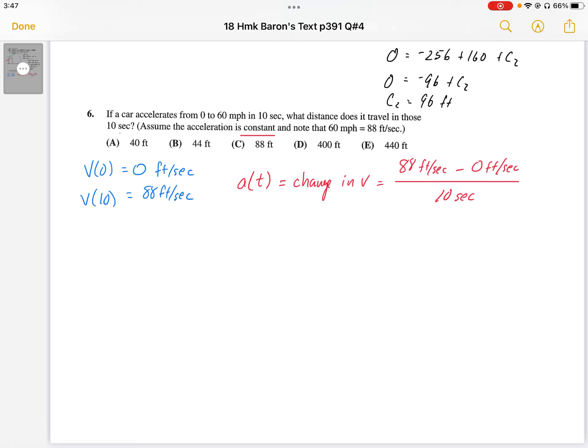And since acceleration is constant, I'm just going to calculate the slope or the change in v as my acceleration. So my acceleration then, I'm going to work this out. 88 feet per second minus zero feet per second.